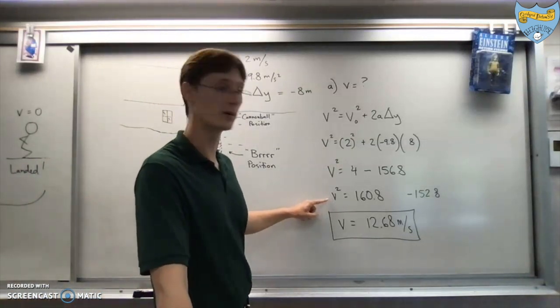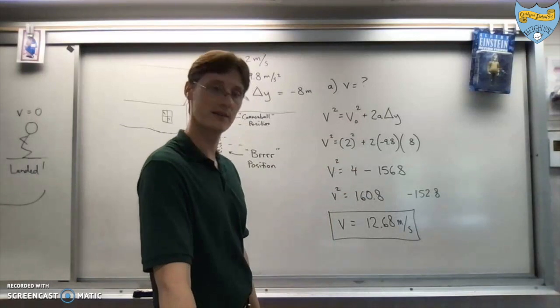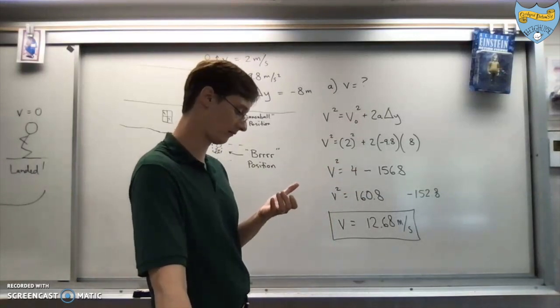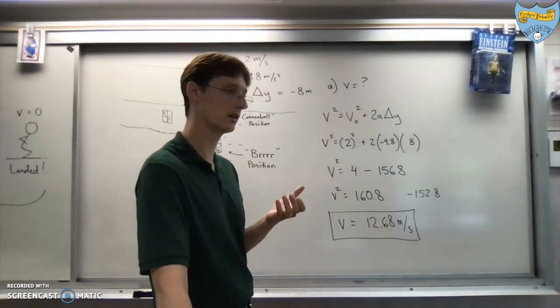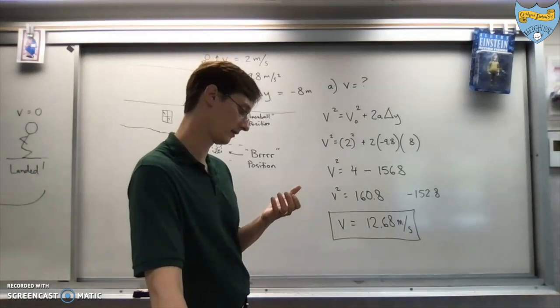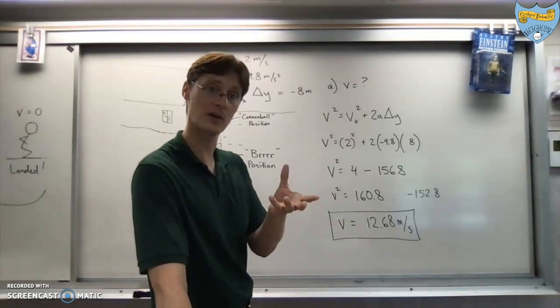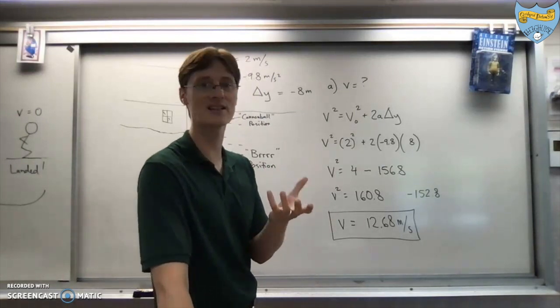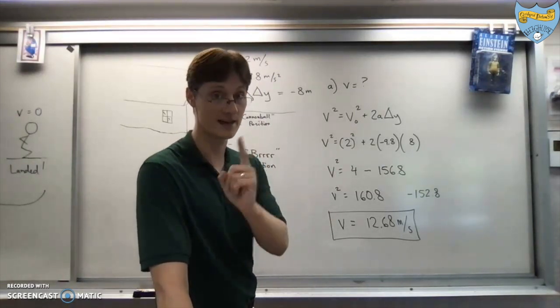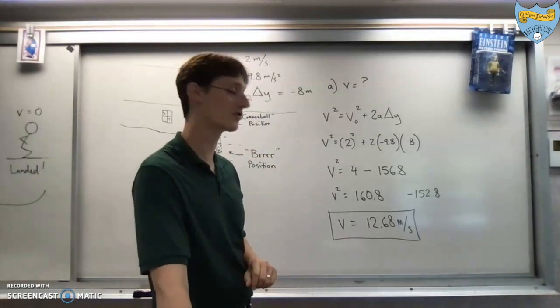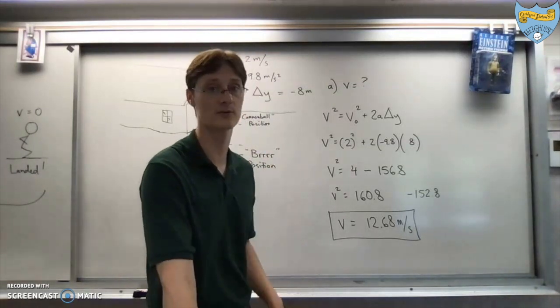One of two things is going to happen to you at this point. One category of people will take the square root. The calculator will say error. And they will say, huh, weird. And then quit. Or maybe go track down the problem and figure out, why did I get a negative number? That's really weird. That response is the best one to try and figure out where you went wrong.